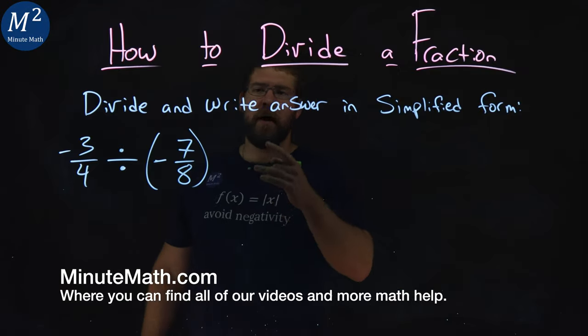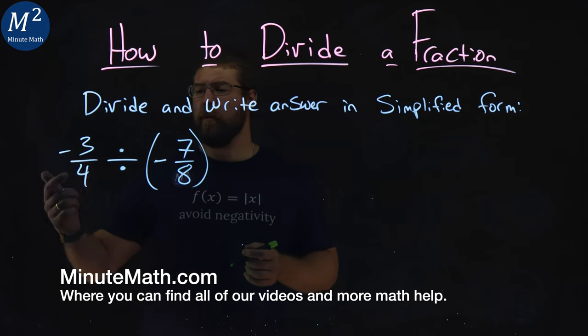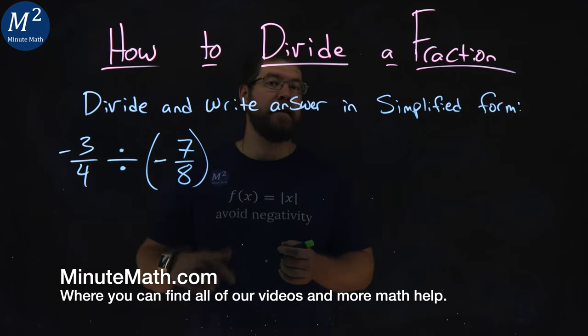We're given this problem right here: divide and write answer in simplified form of negative three-fourths divided by negative seven-eighths.